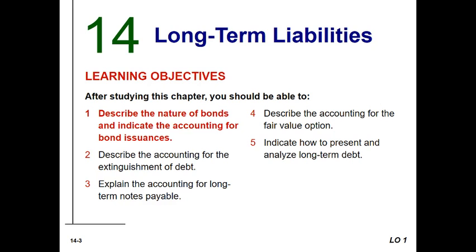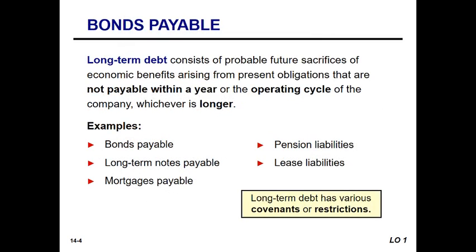We're not going to talk about accounting for bond issuances yet — that'll be in the next lecture. Long-term debt represents the probable sacrifice of economic benefits arising from present obligations that are not payable within a year or the operating cycle, whichever is longer. Long-term debt is an obligation that requires some type of formal agreement between the parties involved.